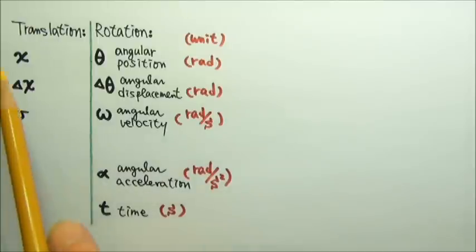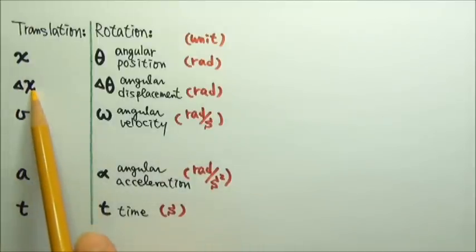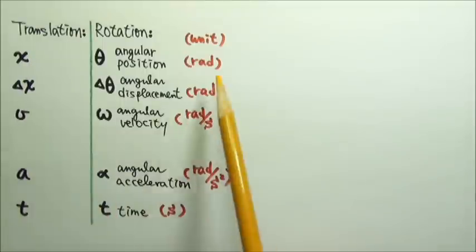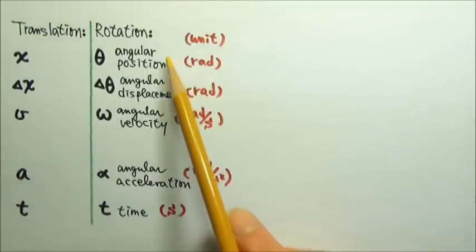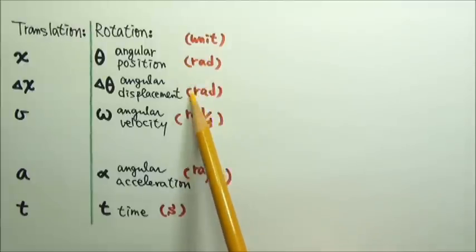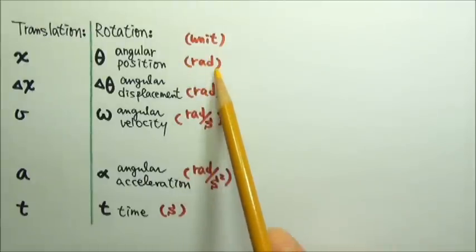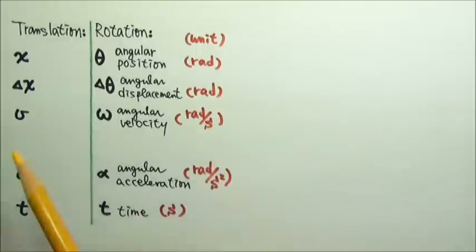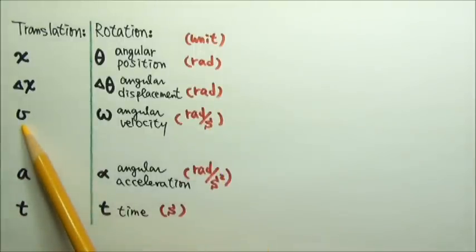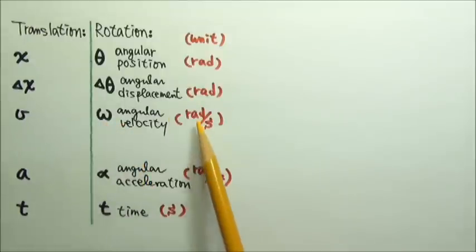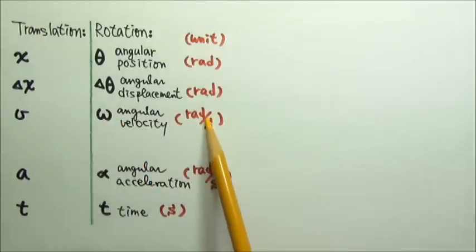The standard unit for position and displacement is meters. For angles, we use radians as the standard unit, not degrees. Velocity is meters per second, so omega's standard unit is radians per second.